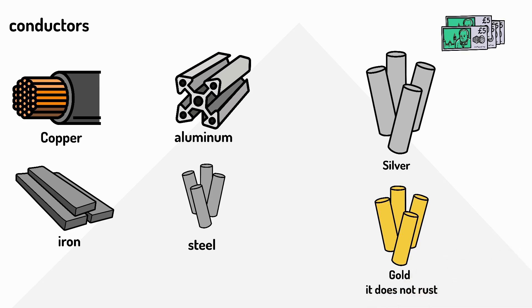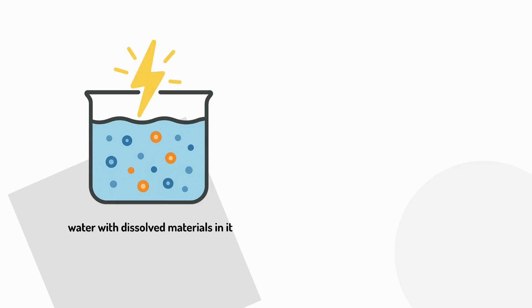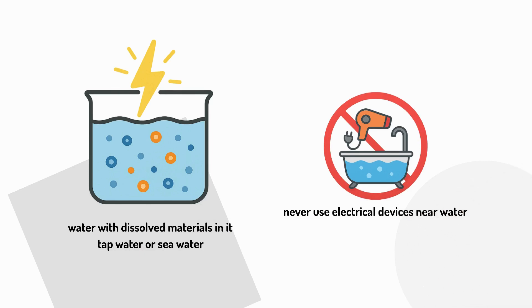There are a few other substances that also conduct electricity, such as water with dissolved materials in it, like tap water or sea water. That's why we're warned never to use electrical devices near water.